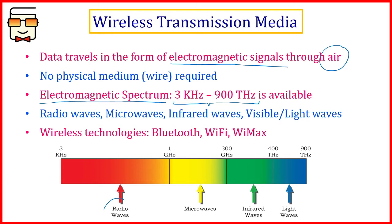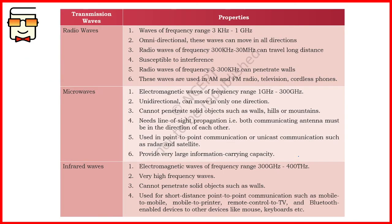This diagram depicts the different ranges and upper and lower limits of different waves. Radio waves start at the lower frequency range of 3 kilohertz to 1 gigahertz. Microwaves lie between 1 gigahertz and 300 gigahertz. Infrared waves lie in the 300 gigahertz to 400 terahertz band, and light waves lie in the 400 to 900 terahertz band. These upper and lower limits and the differences between these waves are taken from your NCERT Class 12 book.